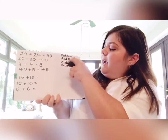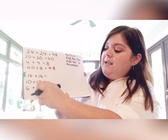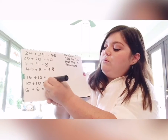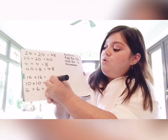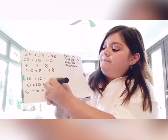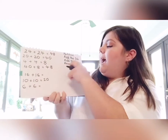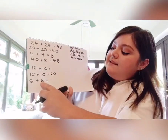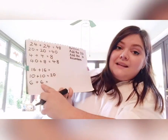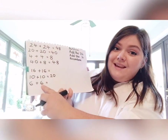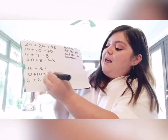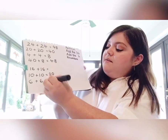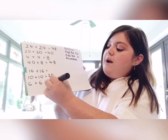Adding the tens together: 10 add 10 equals 20. Add the ones together: six add six — double six — that's right, 12.